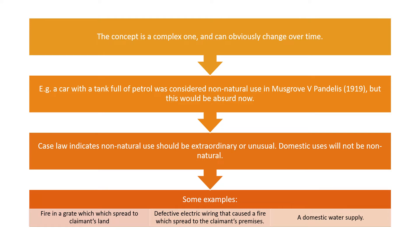It is a complex and evolving idea — for example, a car with a tank full of petrol was considered non-natural in Musgrove v Pandelis in 1919, but now that would be absurd. Case law indicates non-natural use should be extraordinary or unusual. Domestic uses will not be non-natural, so there would be no Rylands and Fletcher claim for an ordinary use of land. In your exams, you will likely see things like the storage of oil or particular flammable liquids as unusual for domestic properties. Examples from case law include a fire in the grate spreading to a claimant's land, defective wiring causing fire, and a domestic water supply — all of these would be natural uses, so a claim would fail.